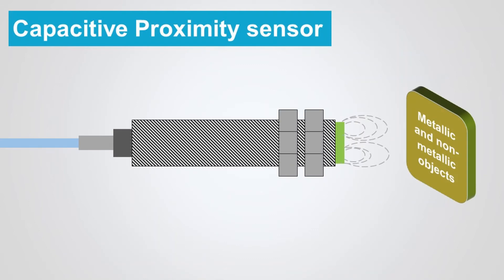Capacitive proximity sensors can detect both metallic and non-metallic targets in powder, granulate, liquid, and solid form. This, along with their ability to sense through non-ferrous materials, makes them ideal for sight glass monitoring, tank liquid level detection, and hopper-powder level recognition.